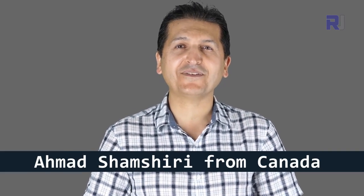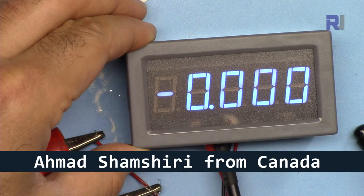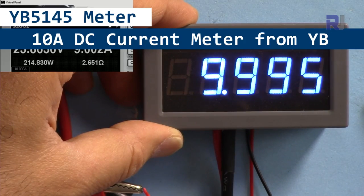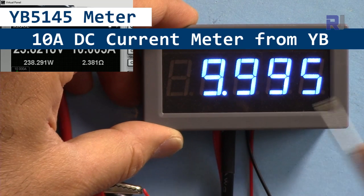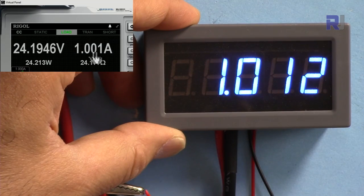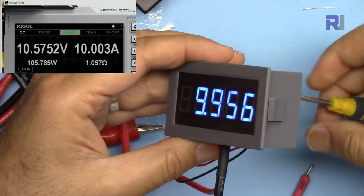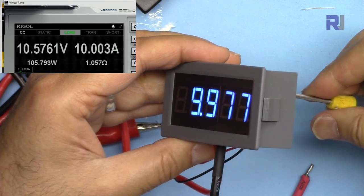Hi, welcome to product review by Robojax, my name is Ahmad Shamshiri. In this video we are going to do the review of this 10A DC current meter or ampere meter from YB electronics. This is YB5145 and we are going to test it with different current values and also at the end I'm going to show you how to calibrate it if it deviates from a value.